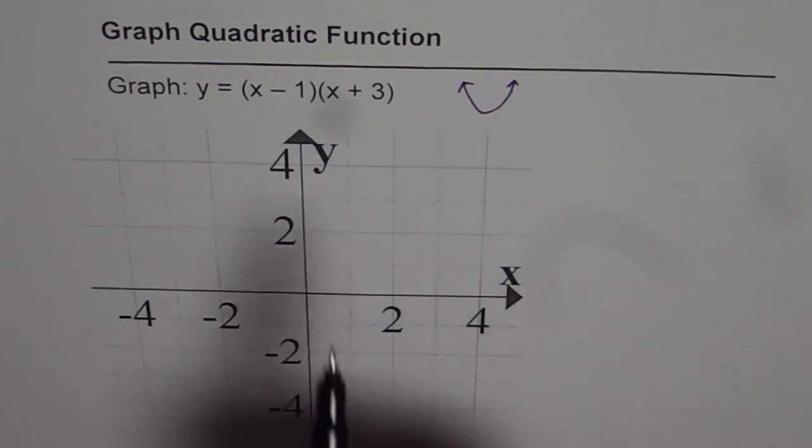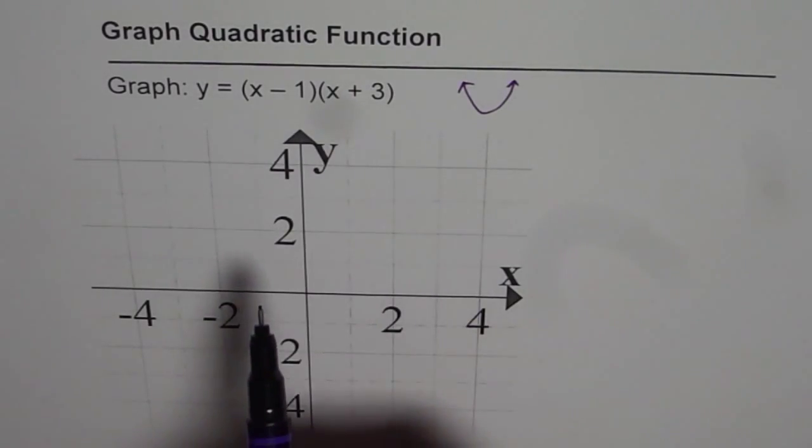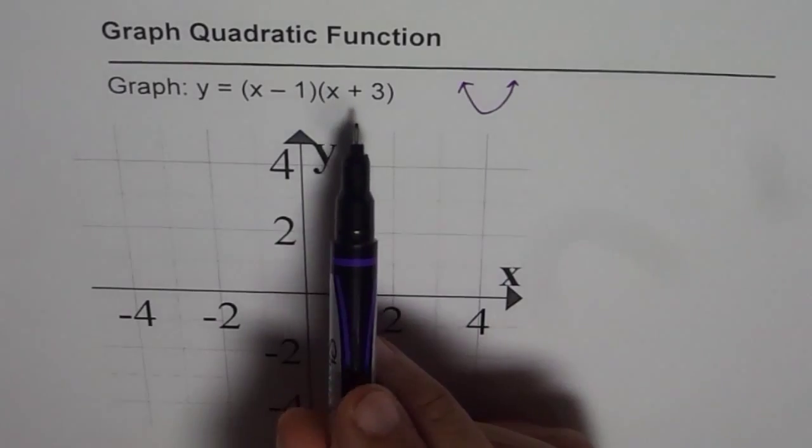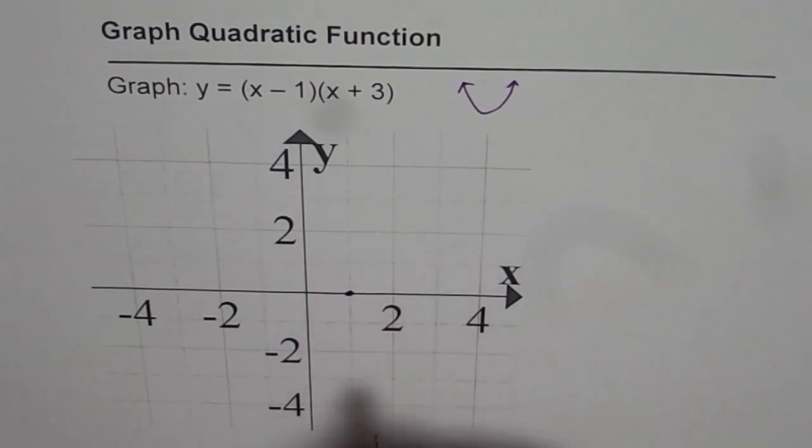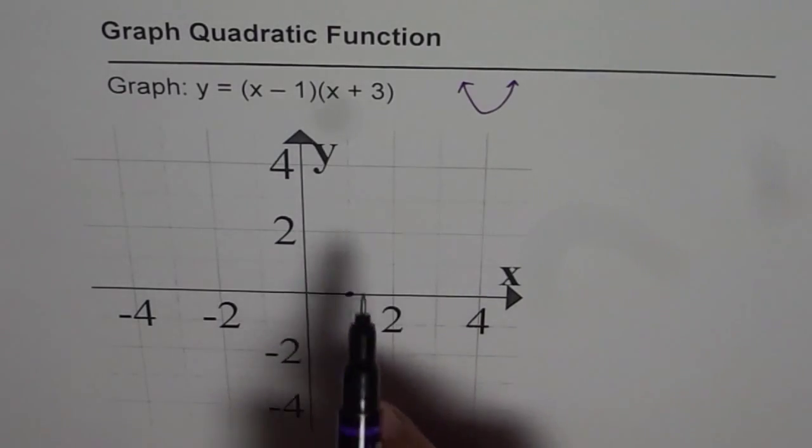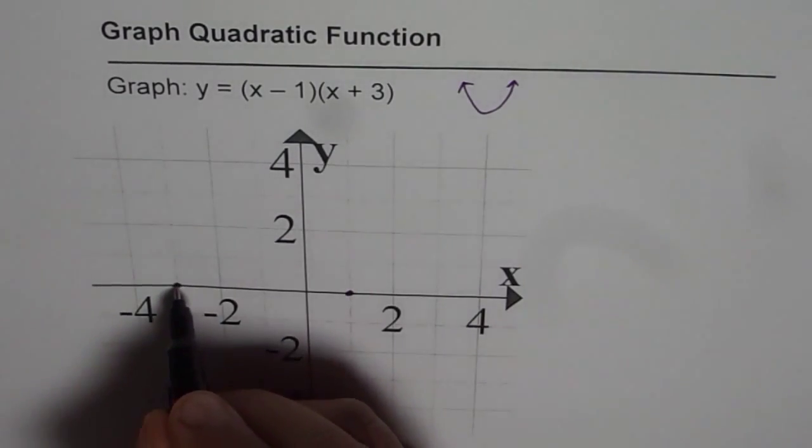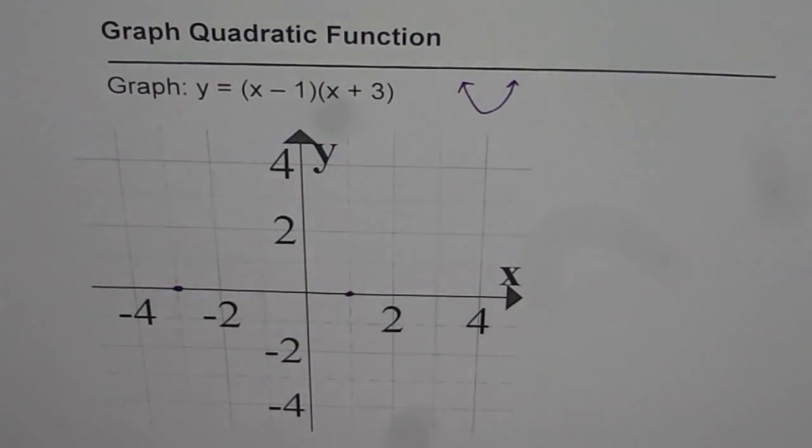Now, we can start with the x-intercepts since the equation is given in factored form. So we got two x-intercepts, one at x equals 1, that is this point, and the other one is at x equals minus 3. So that is the given point, minus 3.